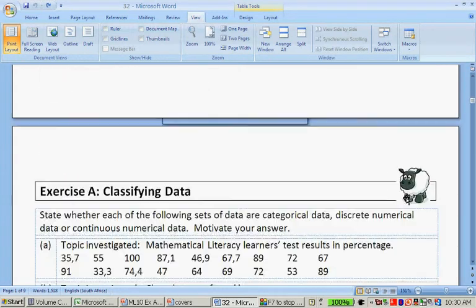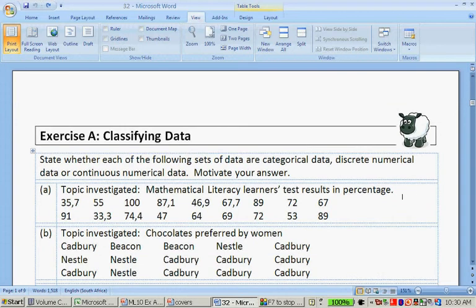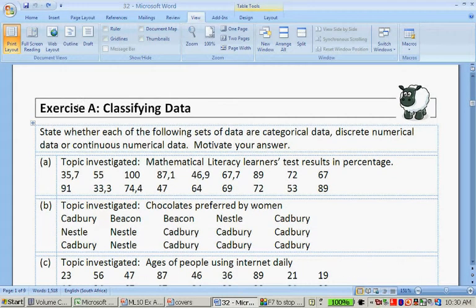Now let's get to an exercise. Classifying data. I'm just quickly going to run through it, and maybe it would be good if you do this by yourself also. So it says state whether each of the following sets of data are categorical, discrete numerical, or continuous numerical. Motivate your answer.